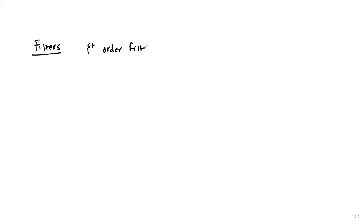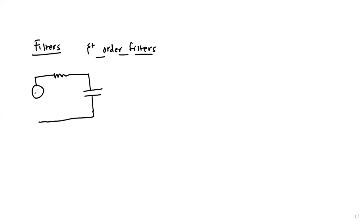Let's talk about filters — specifically first-order filters. We draw the circuit here: we have a resistor and a capacitor connected to a voltage source Vi. We have resistor R, capacitor C, and the current that flows through this network is I.